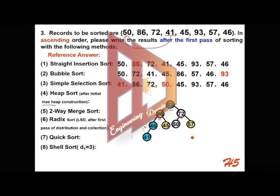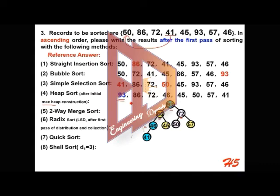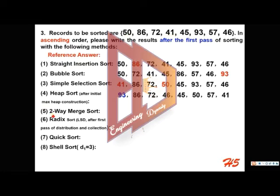This node will be compared and exchanged with the bigger left child. This is the max heap constructed. Write the records from top to bottom on each level, from left to right. This is the heap sort result after the first pass. Remember, the top element must be the largest.